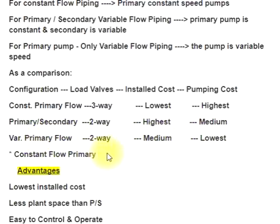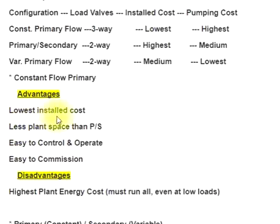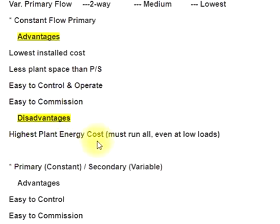Constant flow primary advantages: lowest installed cost, less plant space than primary-secondary, easy to control and operate, easy to commission. Disadvantages: highest plant energy cost — must run all chillers even at low loads.